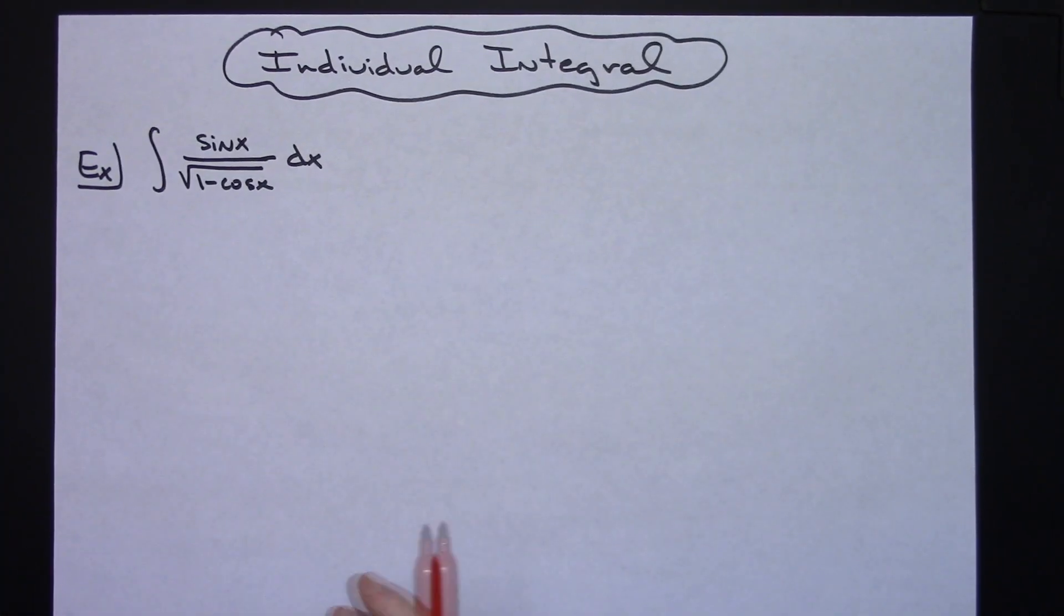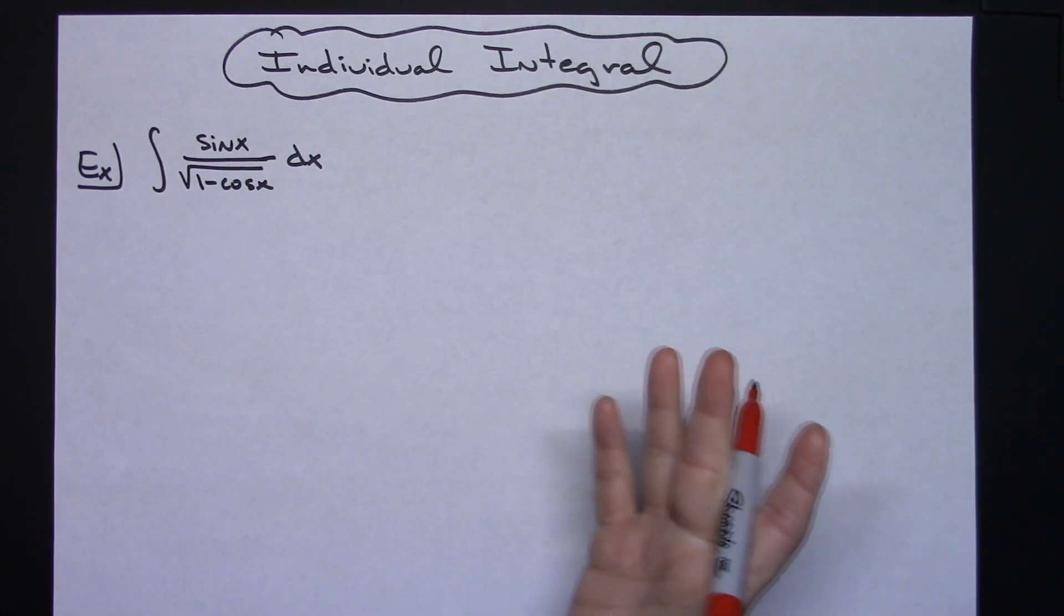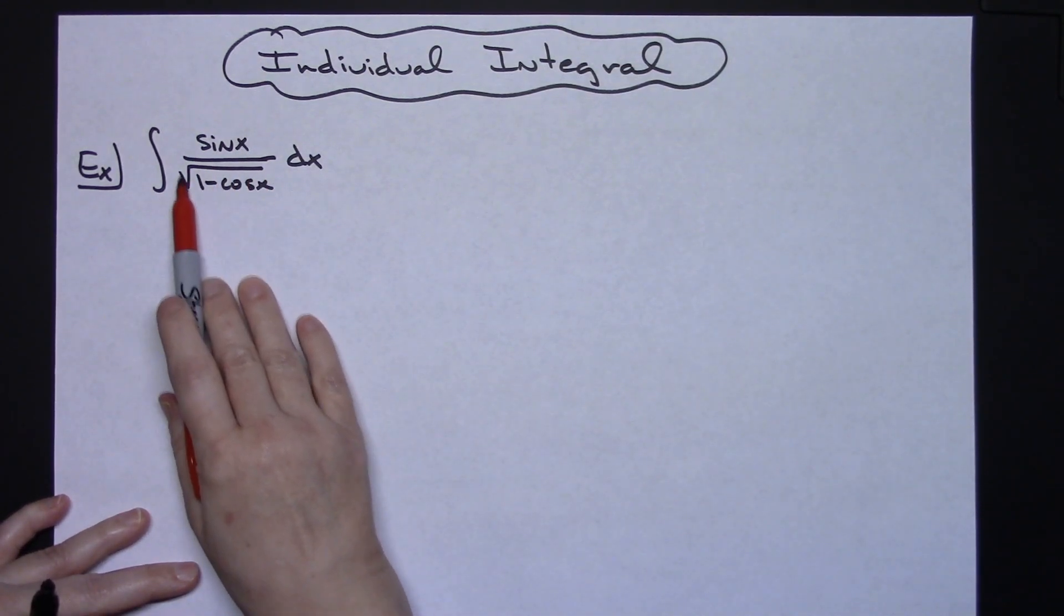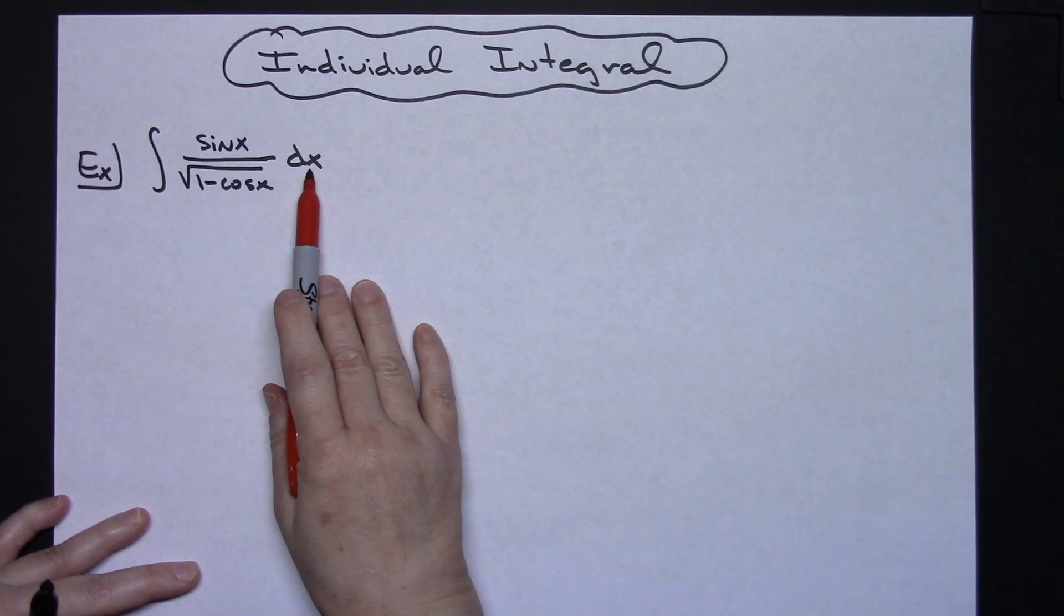In this video I'm going to be working out an individual integral. It's going to be a straightforward u-substitution with absolutely nothing fancy about it. So I've got the integral of sine x over the square root of 1 minus cosine x dx.